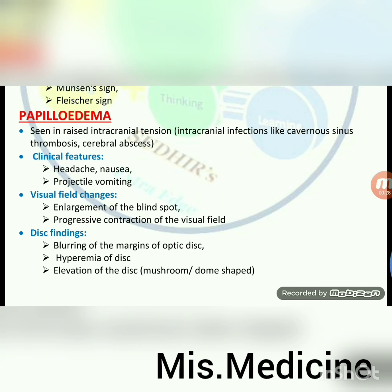Papilloedema: seen in raised intracranial pressure. Causes include intracranial infections like cavernous sinus thrombosis and cerebral abscess. Clinical features: headache, nausea, projectile vomiting. Visual field changes: enlargement of blind spot, progressive contraction of visual field. Disc findings: blurring of margins of optic disc, hyperemia of disc, and elevation of disc (mushroom or dome shaped).